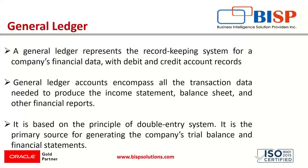The general ledger represents the record-keeping system for a company's financial data with debit and credit account records. Posting transactions to the general ledger is the second step in the accounting cycle — the first being the journal entry. The purpose of posting transactions in the general ledger is to generate the company's trial balance and financial statements. It holds all the accounting information required to prepare financial statements.